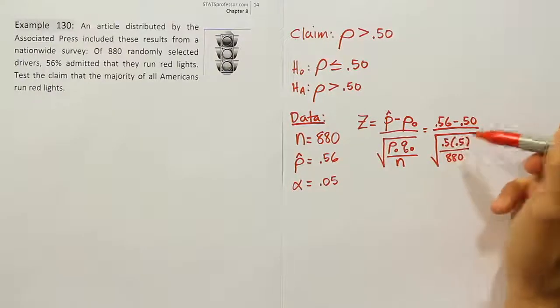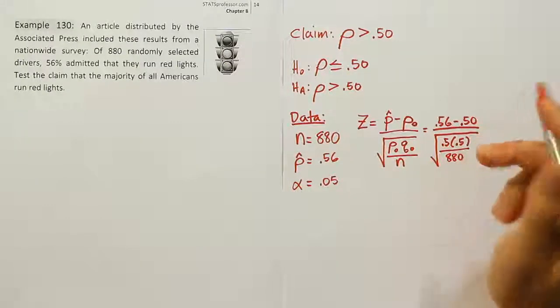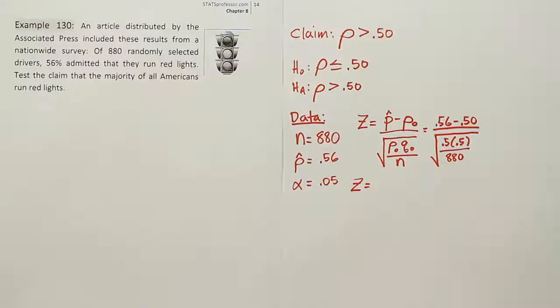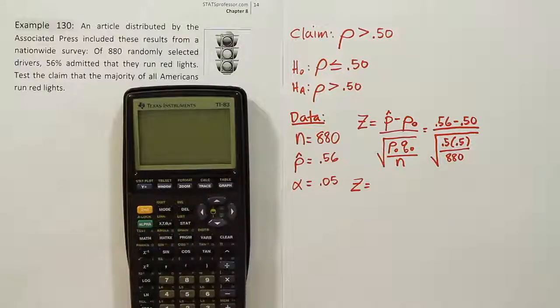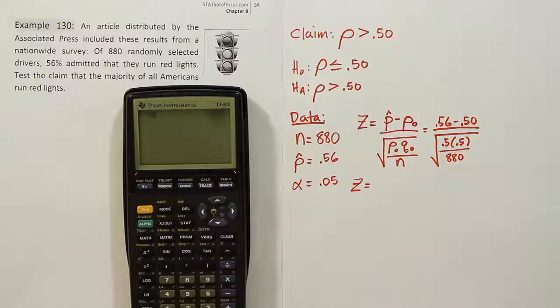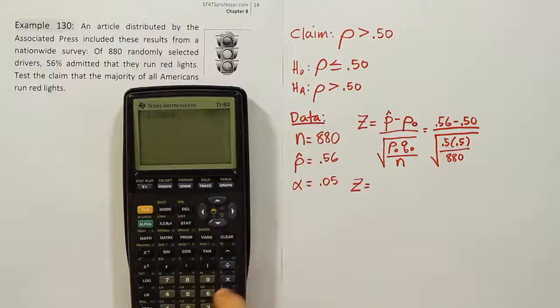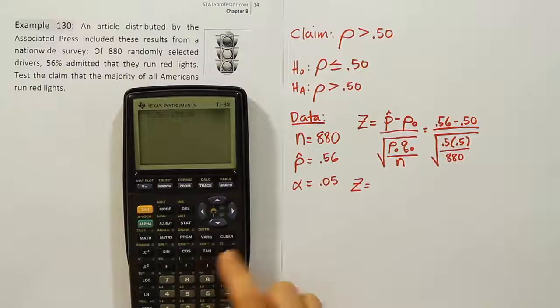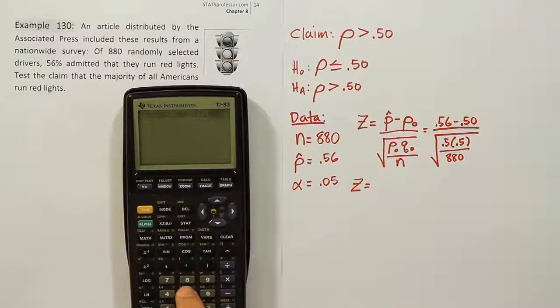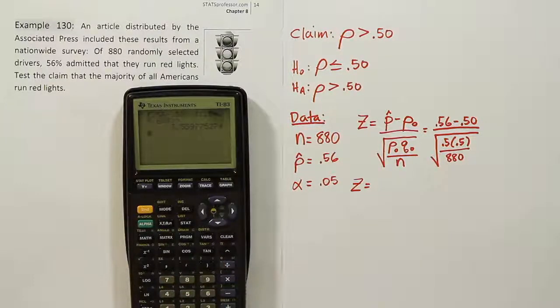Let's work out the test statistic. At the top we'll have 0.56 minus 0.50, which is 0.06. Divide by the square root of 0.5 times 0.5 divided by 880. Close that up, hit enter, and you get 3.56.